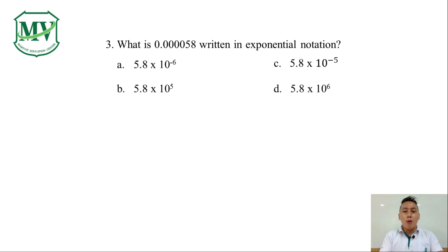Number 3. What is 0.000058 written in exponential notation? A. 5.8 x 10 raised to the power of negative 6. B. 5.8 x 10 raised to the power of 5. C. 5.8 x 10 raised to the power of negative 5. Or D. 5.8 x 10 raised to the power of 6.